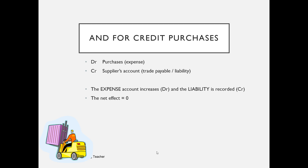When the customer pays us, we'll record that money going into the bank by debiting the bank account and crediting the customer account. Similarly, when we pay the supplier, we credit the bank account to record the payment and debit the supplier account to reduce the amount we owe them.